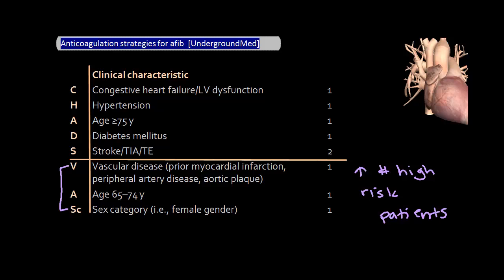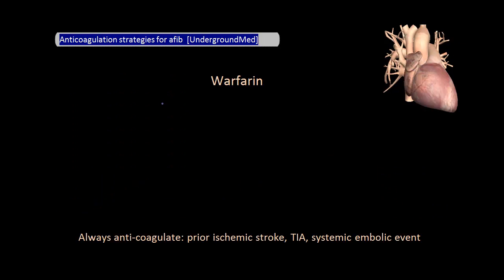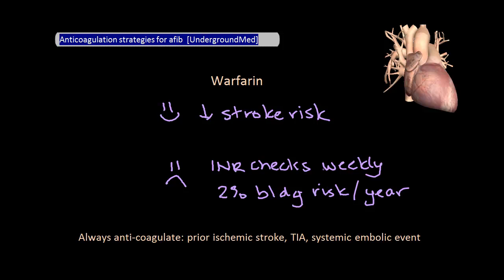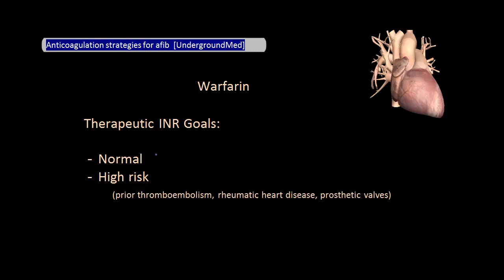The longest-standing anticoagulation option is warfarin, which reduces the risk of stroke by two-thirds compared to patients not receiving antithrombotic therapy. However, the degree of benefit depends on stroke risk. Shortcomings of warfarin include difficulty maintaining patients in the therapeutic INR range, the need for weekly blood draws, and a bleeding risk of approximately 2% per year — defined as hemorrhage requiring hospitalization with transfusion of greater than two packed red blood cell units. Patients with prior ischemic stroke, TIA, or systemic embolic event should definitely be anticoagulated. INR goals are 2–3 for most patients and 2.5–3.5 for those at higher risk.